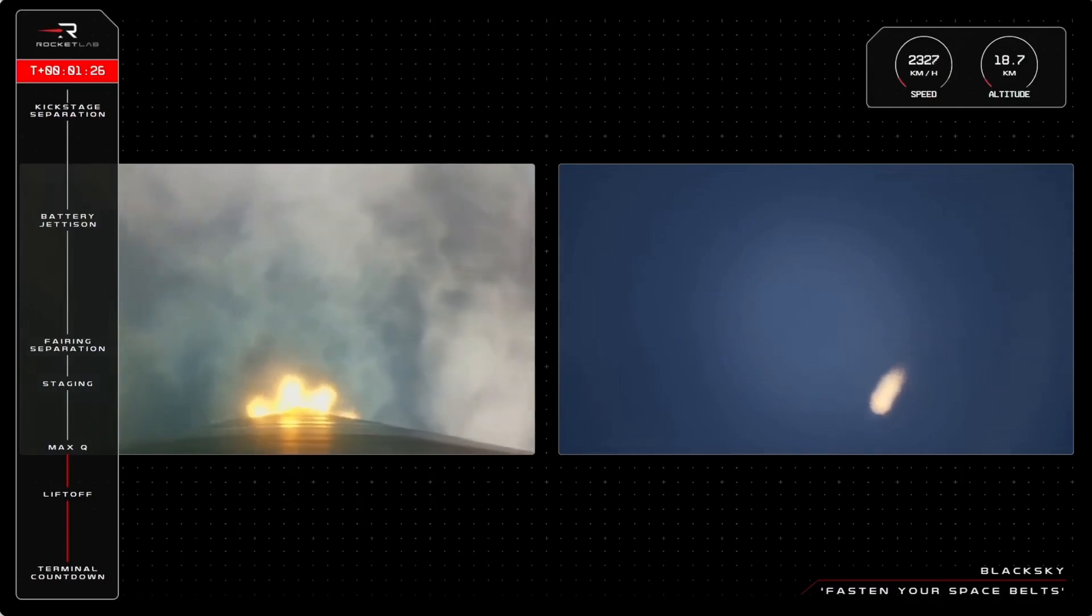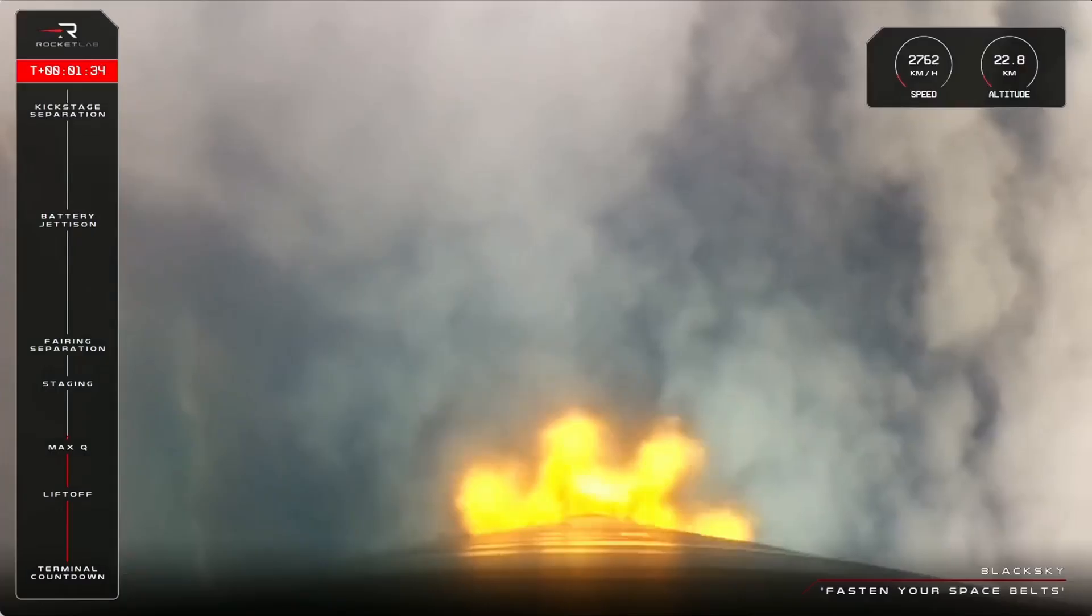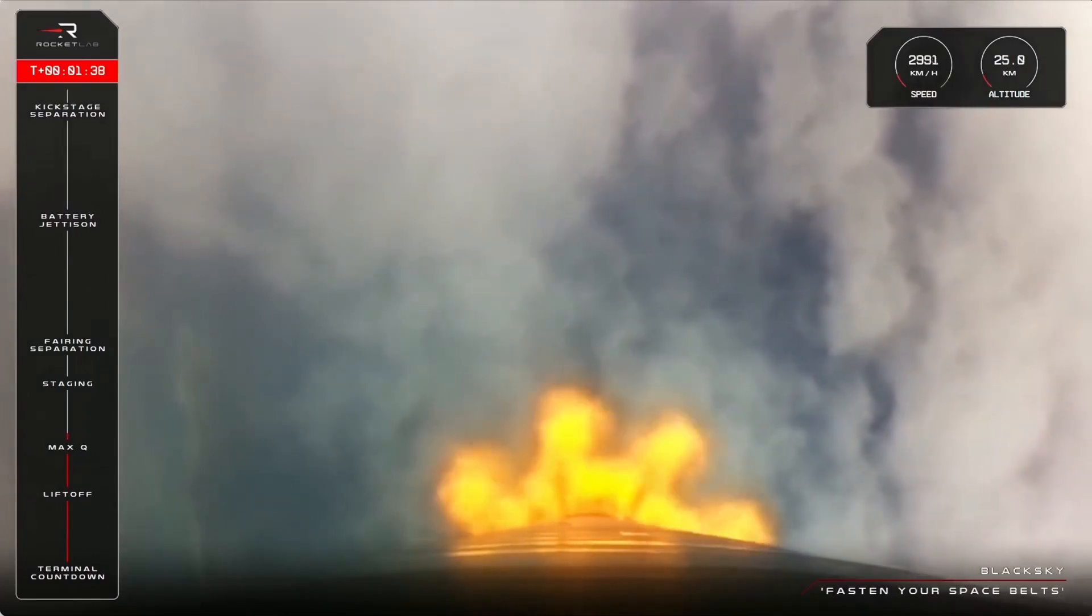You've got to love a daytime launch. We are getting some beautiful views from the onboard cameras back at Earth right now. Electron is now at an altitude of around 21 kilometres and travelling at speeds past 2,900 kilometres per hour.